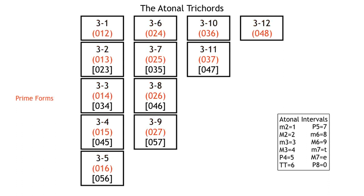Underneath the Fort number, you see a number in parentheses — that's what we call the prime form. That is the most compact statement of the trichord starting on zero. Underneath that, you'll see another set of numbers in brackets. They start on zero and end on the same number as the prime form in the same box, but you'll notice the interior number is different. That's what I call the prime inverted form. Basically, it is the most compact statement of the set where we take the interior interval and move it from being above the lower pitch of the trichord to below the upper pitch of the trichord. I'll explain that more in a different video on trichordal inversion, but for right now it's just enough to memorize these.